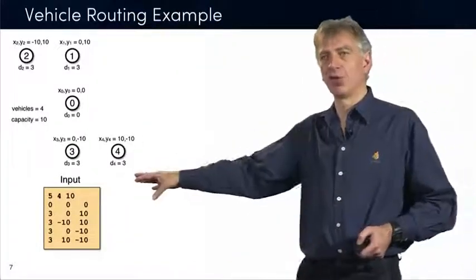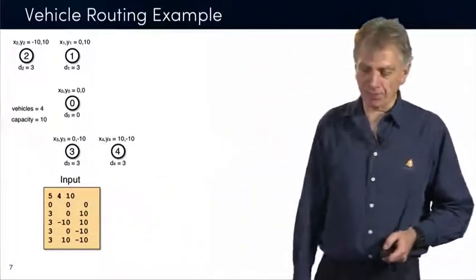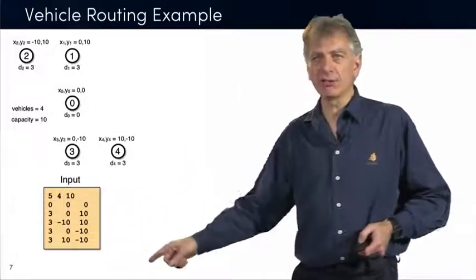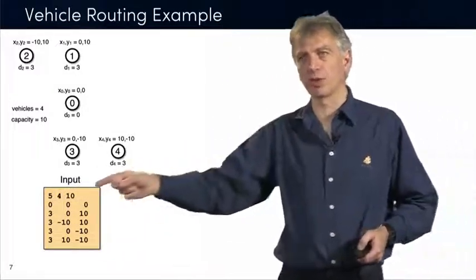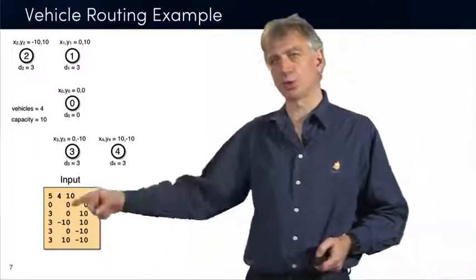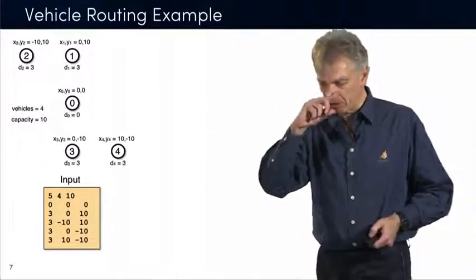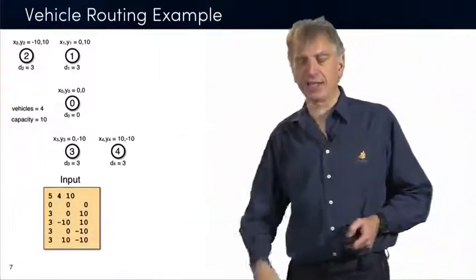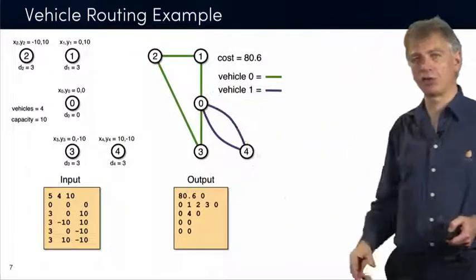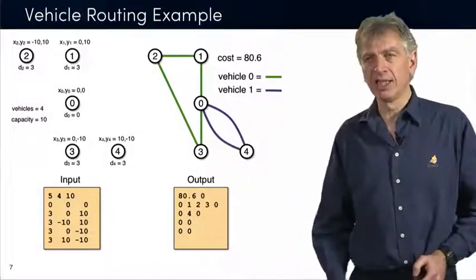For instance, this is the input for this particular simple example. We have five locations, four vehicles, and the capacity of the vehicle is 10. The first one is the warehouse with 0 demand, located at 0,0. Then you see the other ones — demands are basically 3 for every one of them — at locations 0,10; -10,10; 0,-10; and 10,-10. The output is provided by the first bad tour, which has a value of 80.6 and is not optimal, so you have the zero flag there.